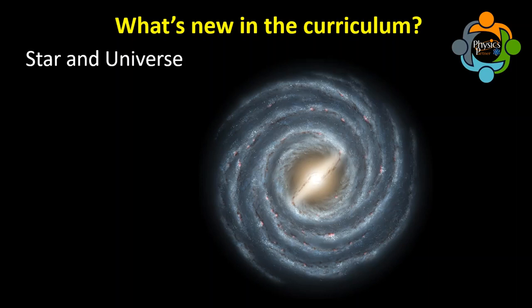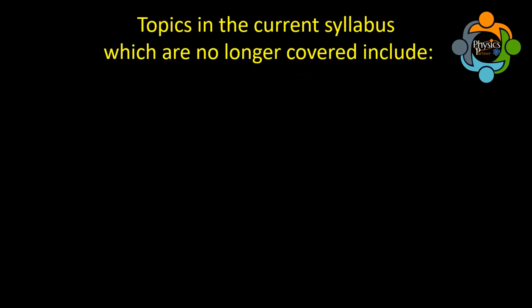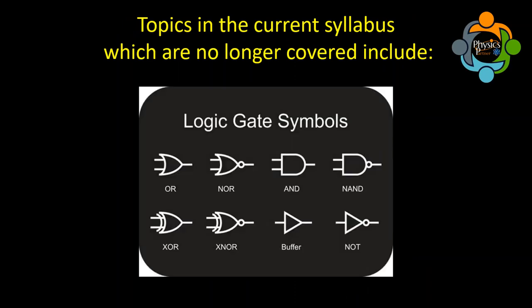Now let's talk about what has been removed from the curriculum. First, logic gate symbols have been completely removed. This was a complicated and challenging topic for students — it was a touch of applied electronics — but it is now fully removed from IGCSE physics.